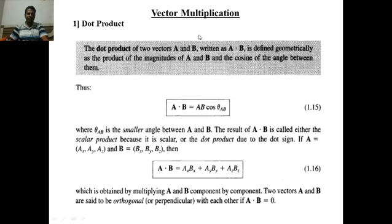Now what exactly is dot product? In the previous lecture I discussed vector multiplication. Multiplication of two vectors can be done with the help of dot product and cross product. Dot product is written as A dot B bar. Many students do not write the dot during the exam, which is not acceptable. Vector A bar dot B bar — sometimes the vector is written as A bar B bar, but A dot B and A bar dot B bar are one and the same thing.